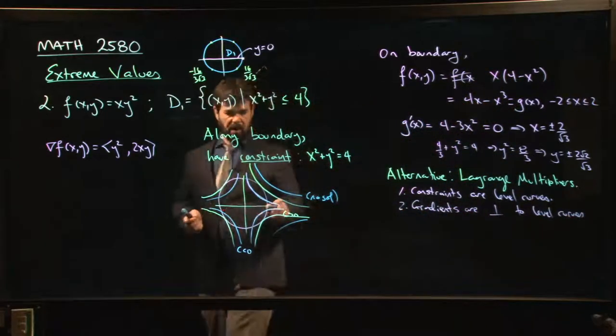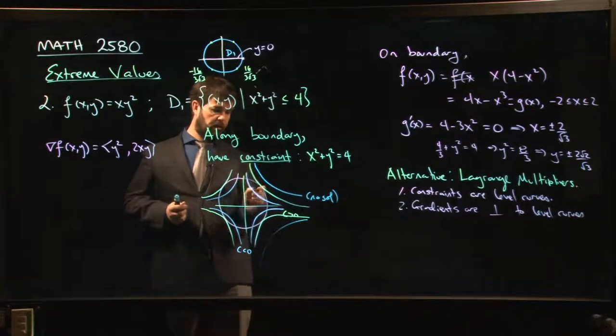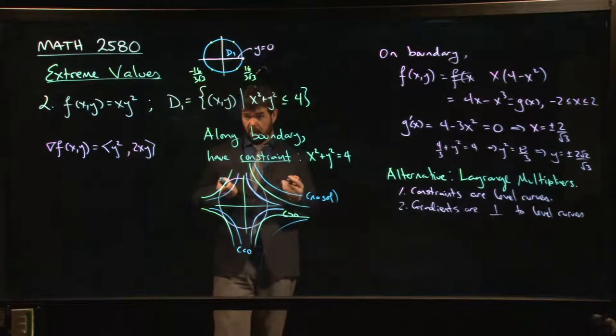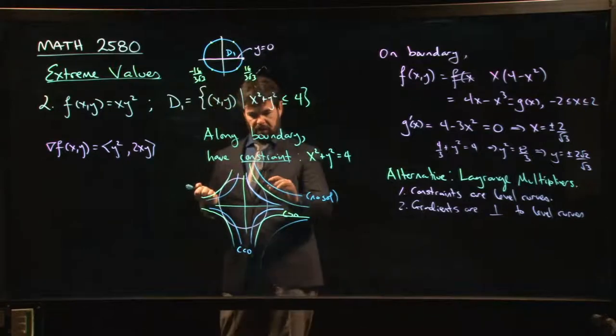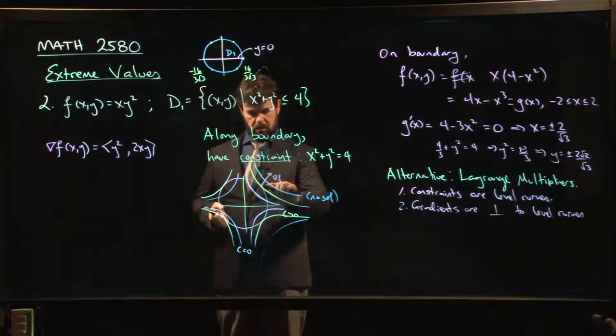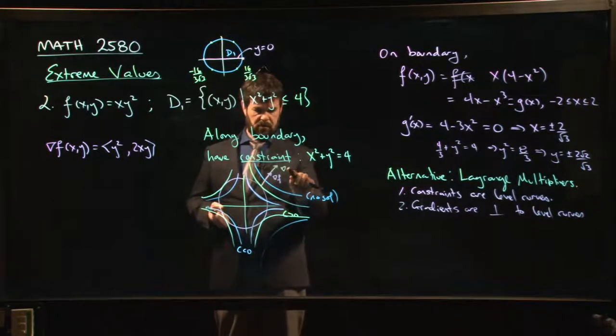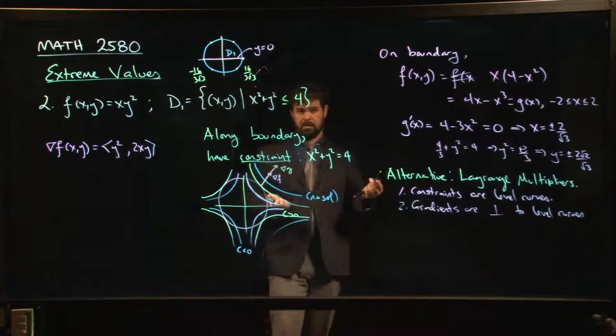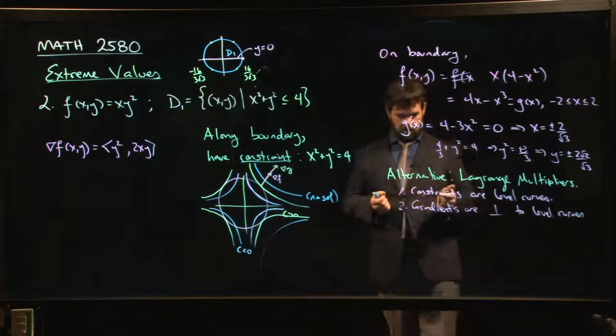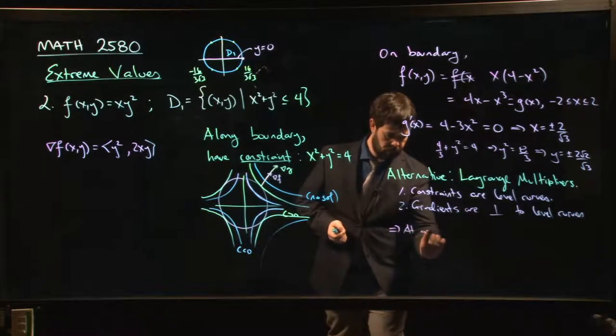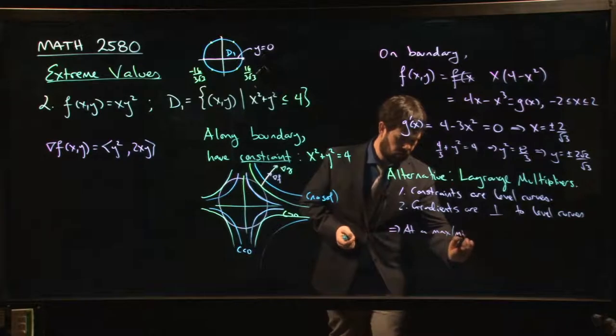And so if I have two curves which are tangent to each other, that means their tangent lines are the same at that point. Those two tangent lines are going to have the same normal vector, or at the very least, parallel normal vectors. So the gradient of f and the gradient of g, they're going to be parallel. How do we express the fact that two vectors are parallel?